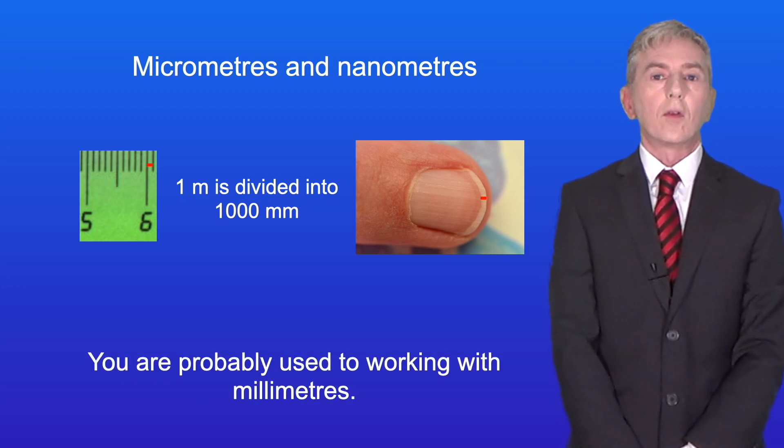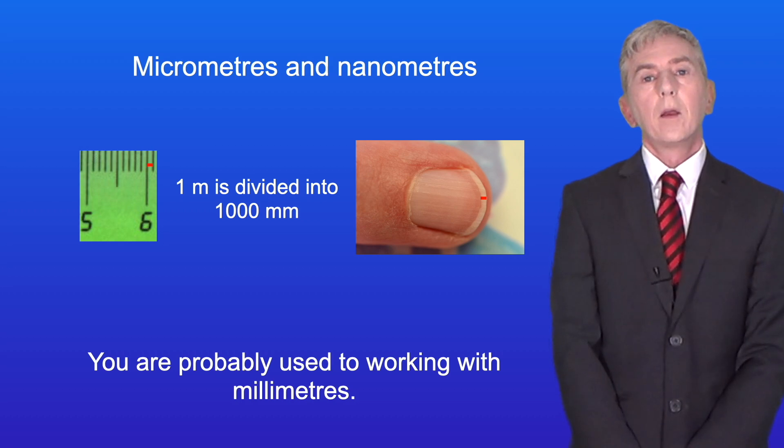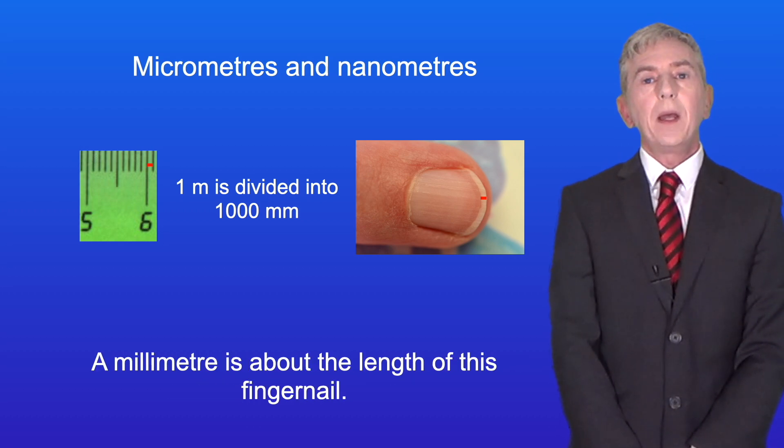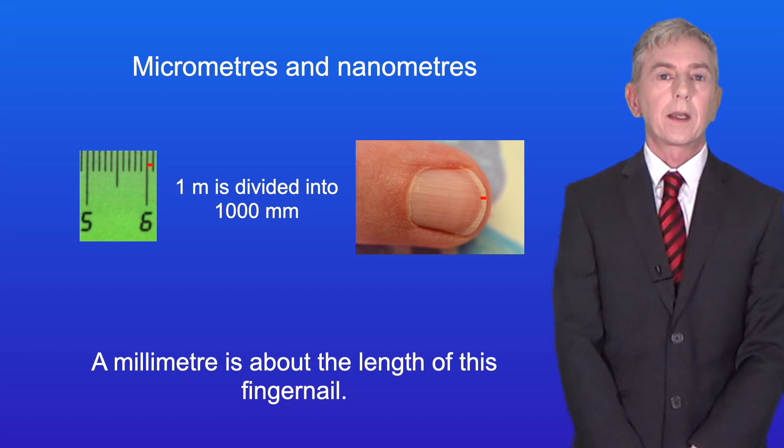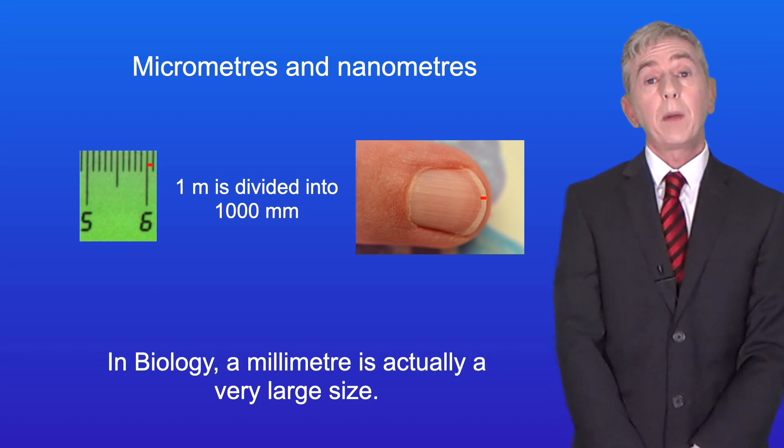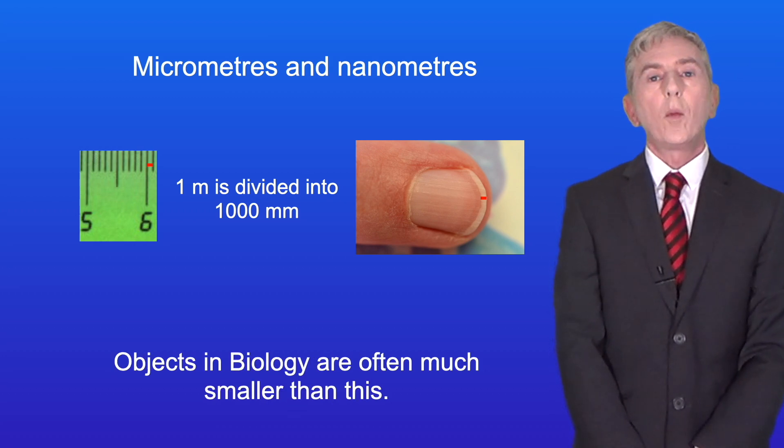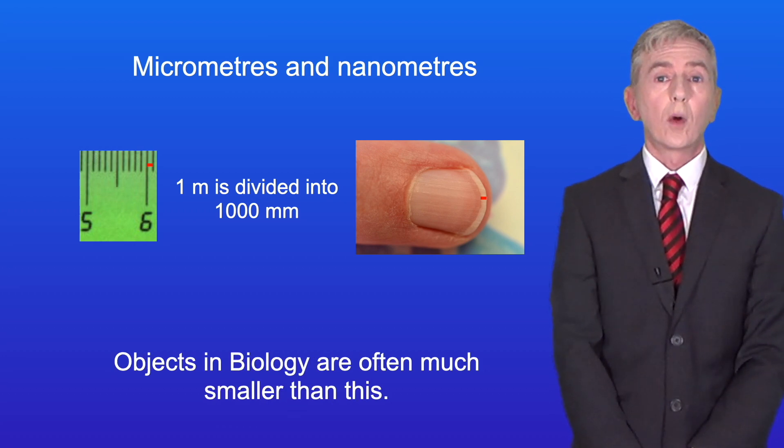You're probably used to working with millimeters. Remember that one meter is divided into one thousand millimeters. A millimeter is about the length of this fingernail. Now in biology a millimeter is actually a very large size. Objects in biology are often much smaller than this.